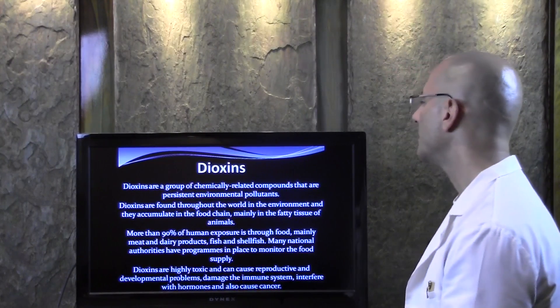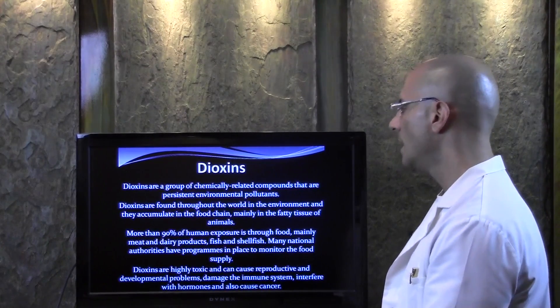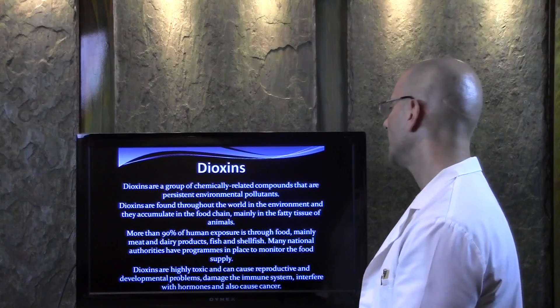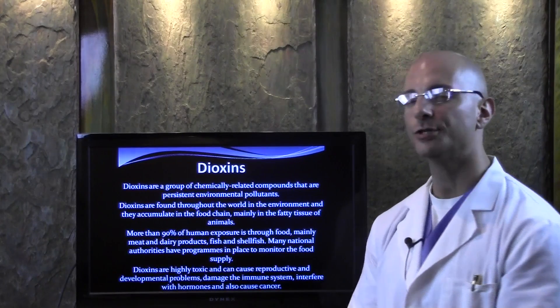Dioxins are a group of chemically-related compounds that are persistent environmental pollutants. Dioxins are found throughout the world in the environment, and they accumulate in the food chain, mainly in the fatty tissues of animals.